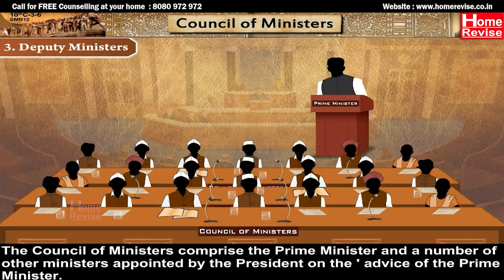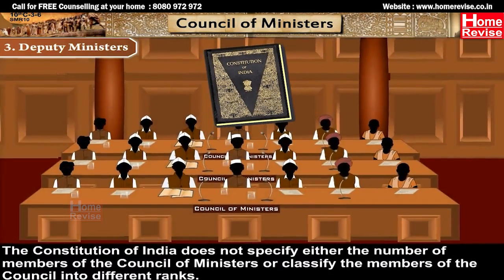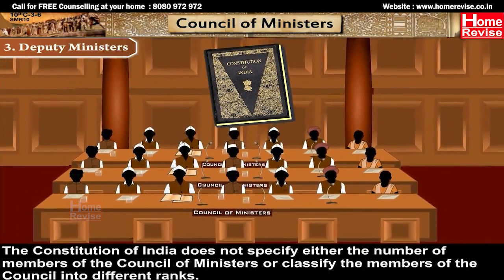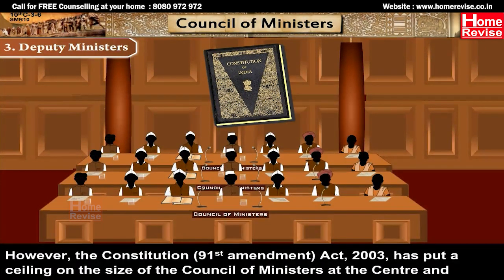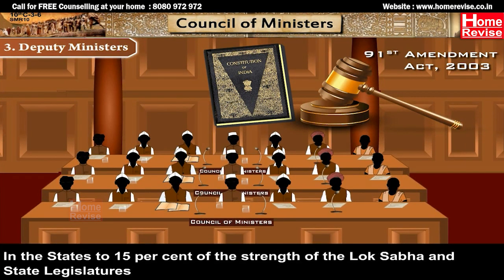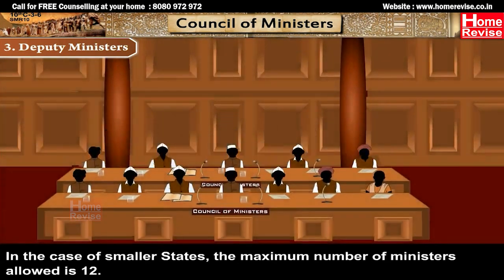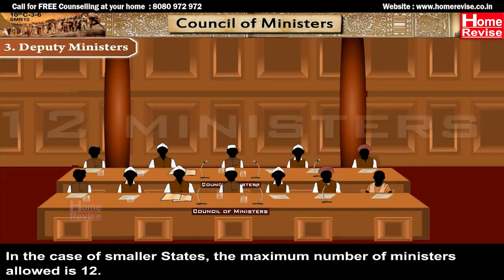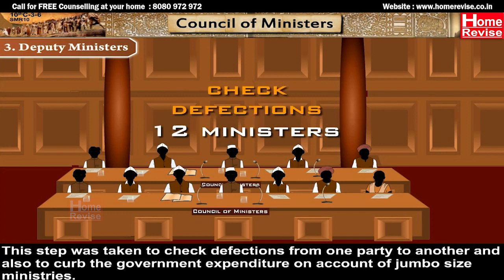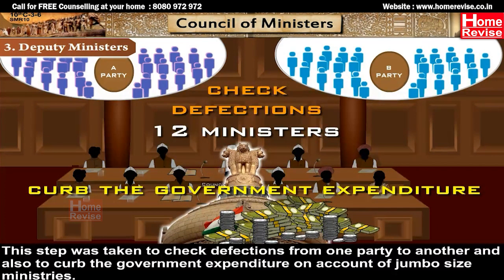The Council of Ministers comprises the Prime Minister and a number of other Ministers appointed by the President on the advice of the Prime Minister. The Constitution does not specify the number of members or classify them into different ranks. However, the 91st Amendment Act of 2003 put a ceiling on the size of the Council of Ministers at the Centre and in the States to 15% of the strength of the Lok Sabha and State Legislatures. In smaller States, the maximum number of Ministers allowed is 12. This step was taken to check defections and curb government expenditure on account of jumbo-sized ministries.